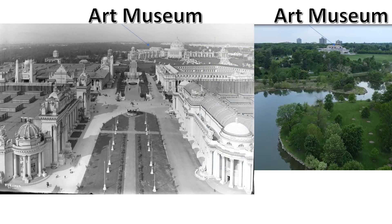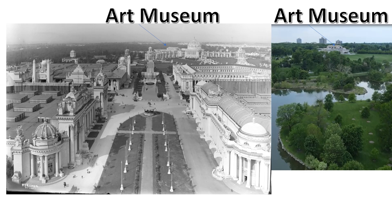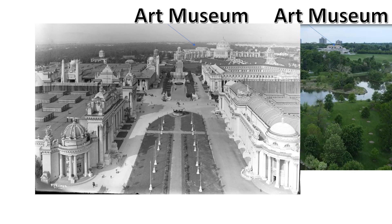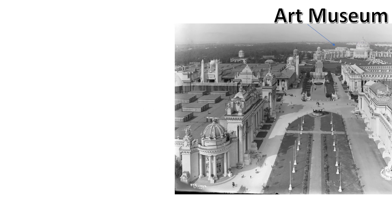What I'm going to do now is bring the picture on the left and superimpose it over top of the current view, just so you can see how this lines up perfectly. Just a glimpse of the past and what Art Hill used to look like when over 20 million people came and visited Forest Park from April 30th to December 1st of 1904.